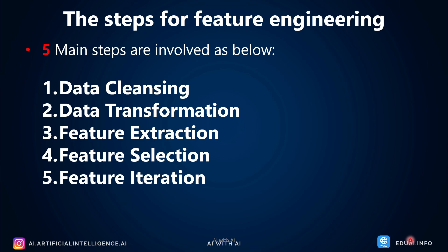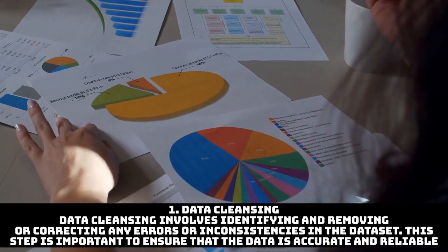The second thing is data transformation. We'll talk about this in short. The third thing is feature extraction. The fourth is feature selection, and the last one is feature iteration. Let's talk about these one by one quickly.